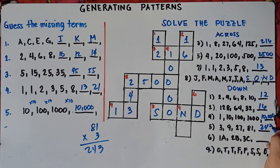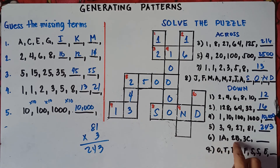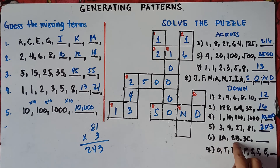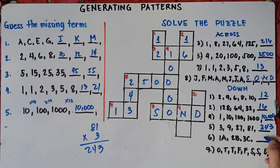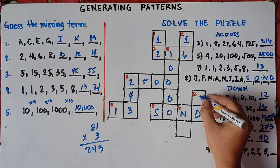For number 6 down, we have 1A, 2B. The numbers are consecutive: 1, 2, 3. The letters are also consecutive: A, B, C. So the next will be 4D.